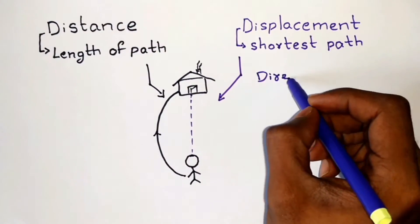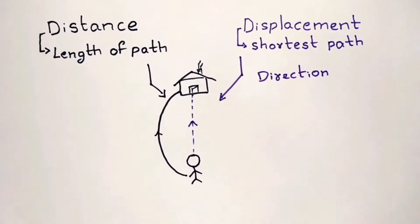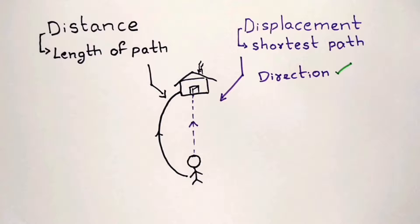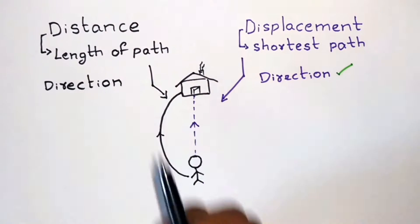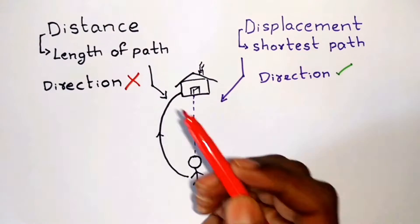Displacement is a vector quantity, which means it has both magnitude and direction. Its direction is given from initial to final positions. Whereas distance is a scalar quantity, so it doesn't have any direction but it has a magnitude.